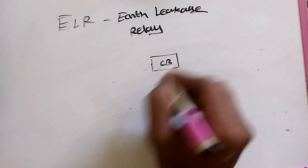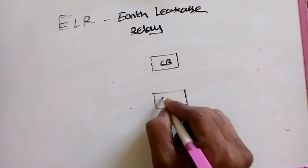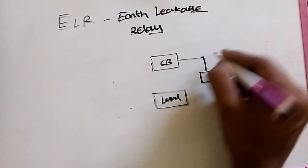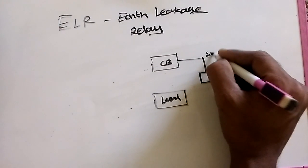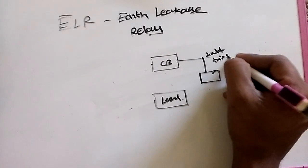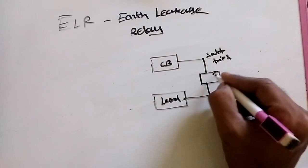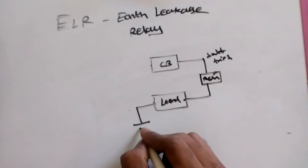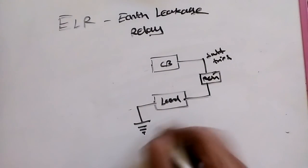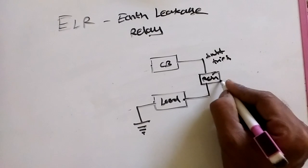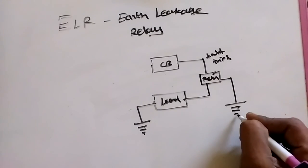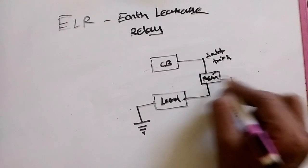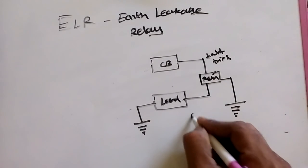This is for the shunt trip tripping signal. In this case, the load is connected to one earth terminal, and the relay coil is connected to the metal body of the earth. These are the two things. We always maintain zero voltage.